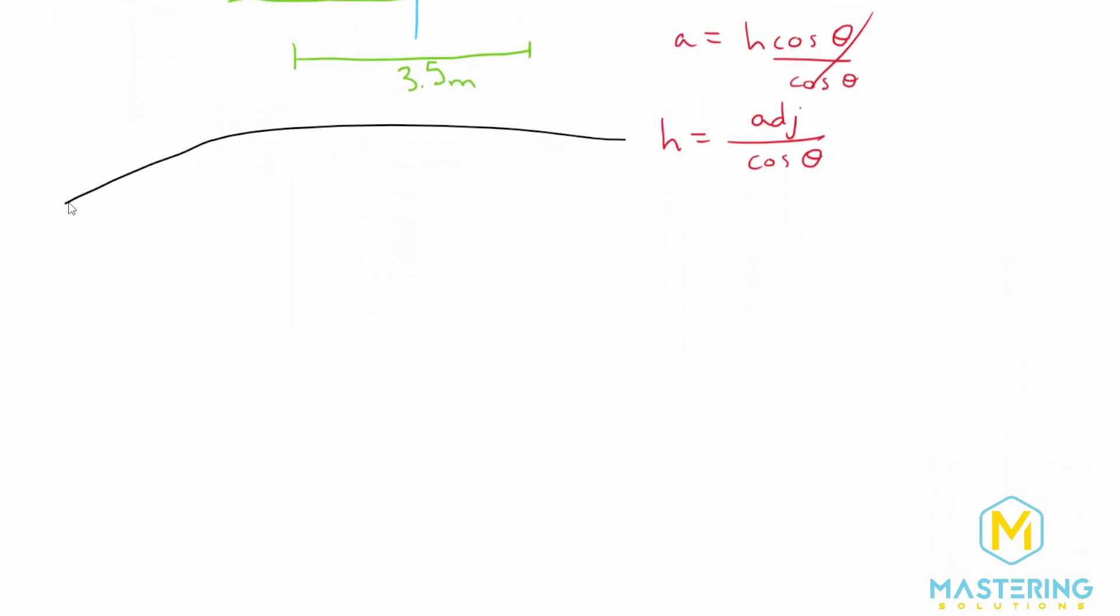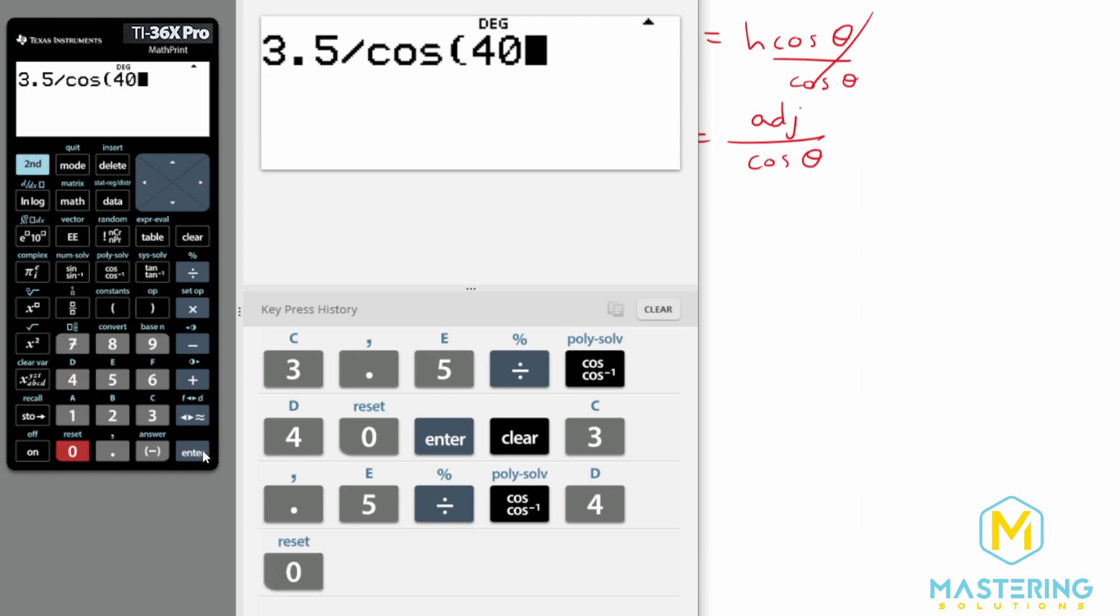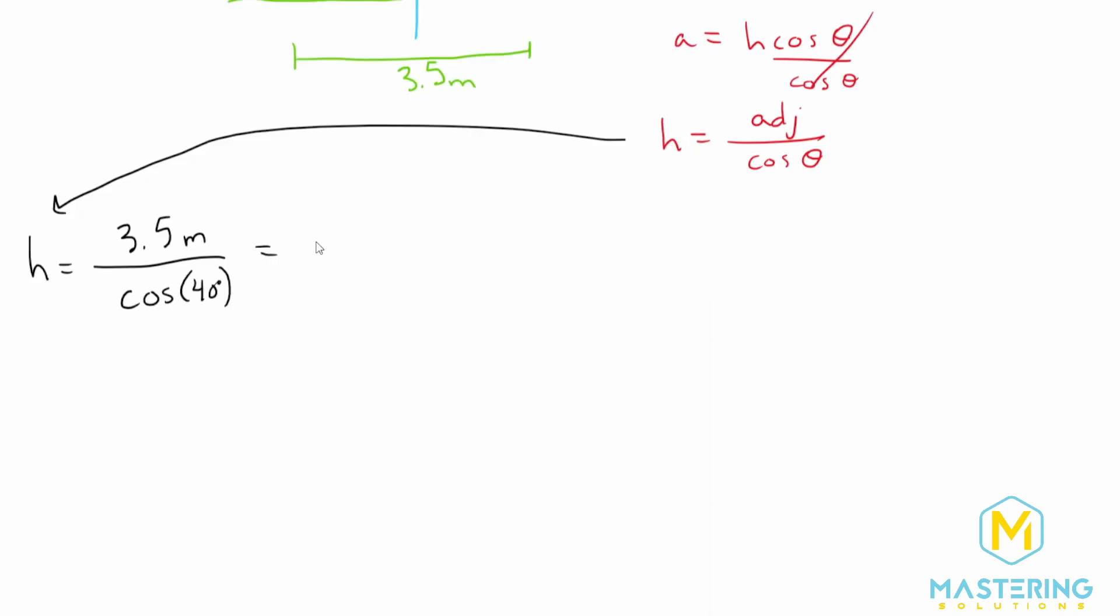All right, so let's bring this over here and plug in our numbers. So H is equal to the adjacent, which we said was 3.5 meters, divided by the cosine of the angle, which of course was 40 degrees in this case. So H is 3.5 divided by the cosine of 40 degrees. So the path length that the squirrel took is 4.568.